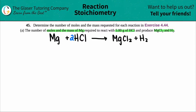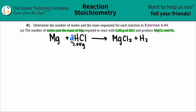I like to keep everything organized, so I write down exactly what they gave me and what I'm looking for. They told me I have 5.00 grams of HCl, so under HCl I put 5.00 grams. I also write down what the question is asking for — the moles and the mass of magnesium. So: moles = ? and mass (grams) = ?. Now we can clearly see we're starting with one thing and going to another component on the balanced equation — stoichiometry.